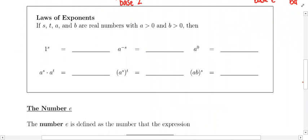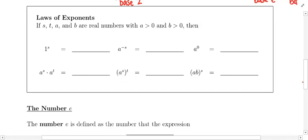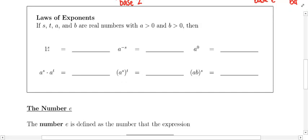These are some things you should have learned from an algebra class, but let's do a review. In the box entitled 'Laws of Exponents,' it says: if s, t, a, and b are real numbers with a > 0 and b > 0, then the following properties hold. This first property talks about what happens if we raise 1 to a power.